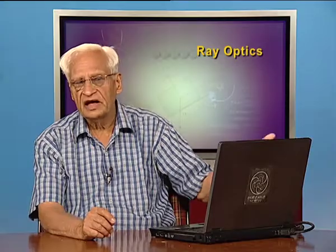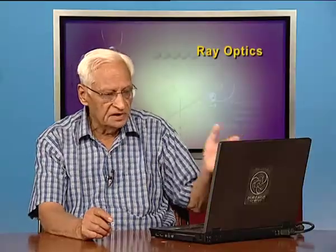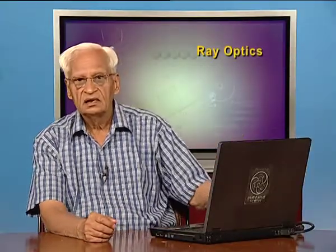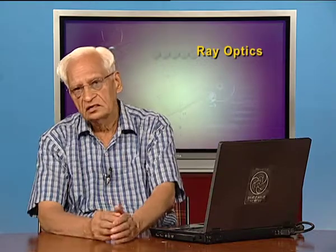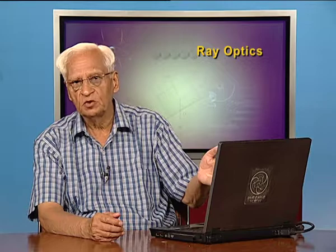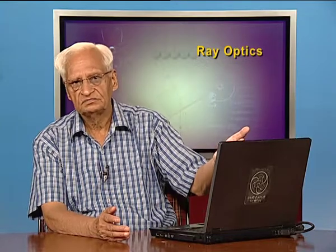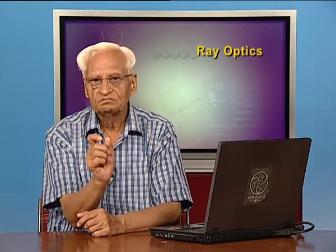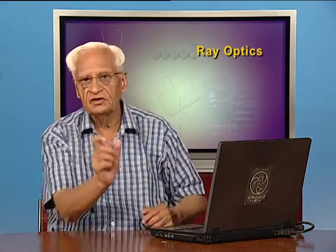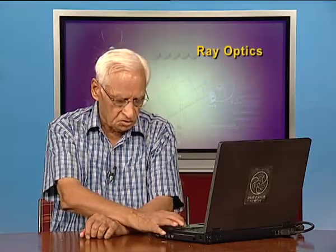While dealing with lenses, we will have several terms like principal axis or optical axis, focal length, distance of the object, distance of the image, and so on. We shall be dealing with thin lenses, meaning lenses whose width is very small compared with the focal length. We shall assume that the distance between the two surfaces of a lens is very small compared with the focal length. Such lenses are known as thin lenses, and we shall work in the context of thin lenses.